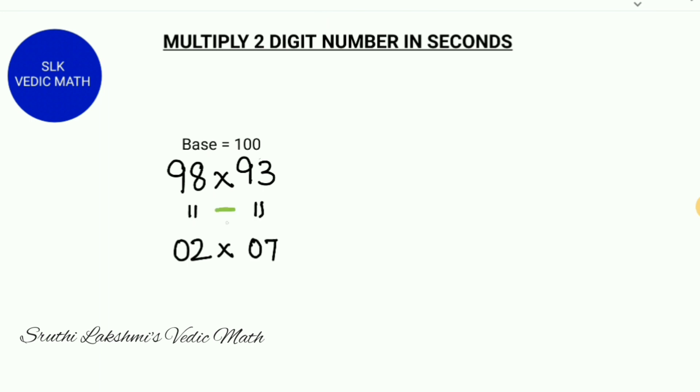Put a minus sign here since 98 and 93 are below 100. Next, we multiply 2 into 7 to get the last two digits of our answer. So 2 into 7 is 14. So we write 14 from right to left.